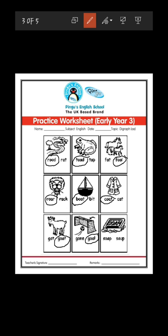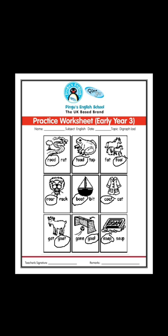Next is soap. Look at the spelling of soap: S-O-A-P, soap, or S-O-U-P, soup? S-O-A-P, soap. So here you can circle S-O-A-P, soap.